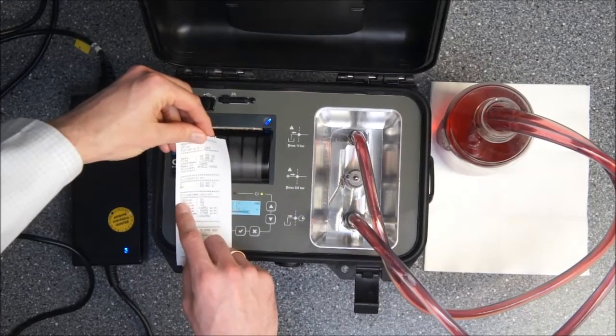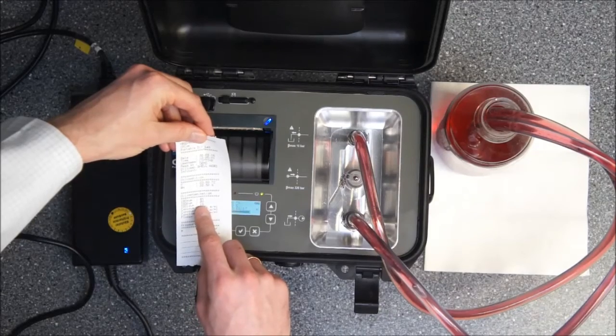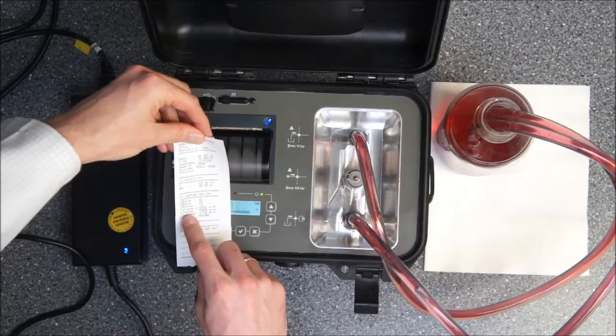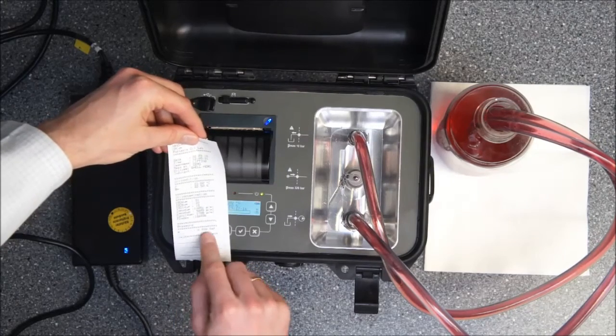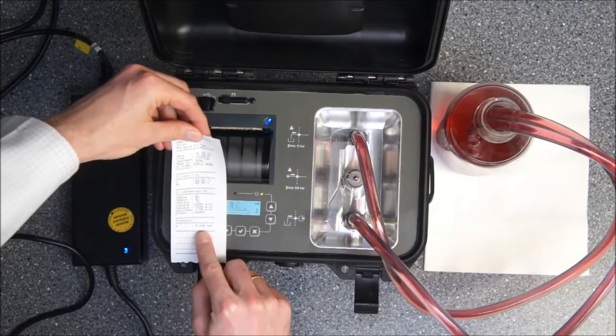Next is the oil contamination. There we have the ISO readings in the ISO classes and also the particle countings that we have measured. Last but not least you see the measurement of the pressure at the bottom.